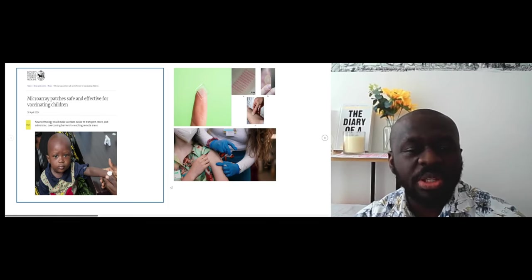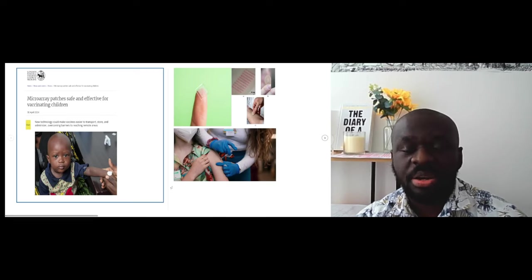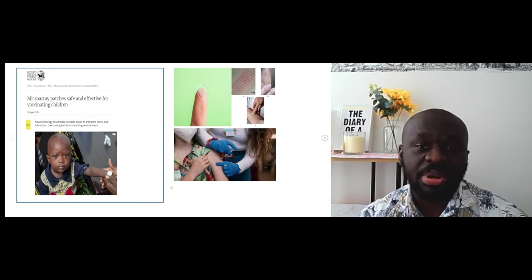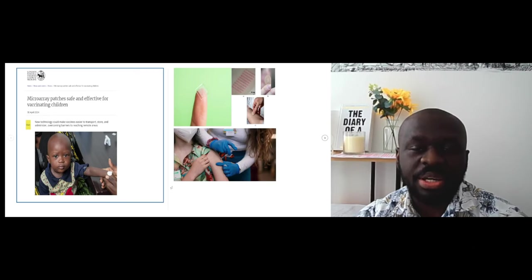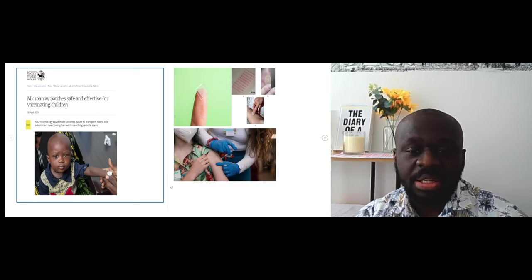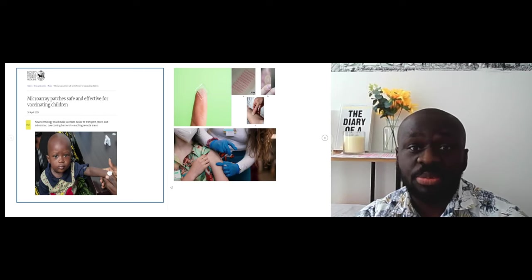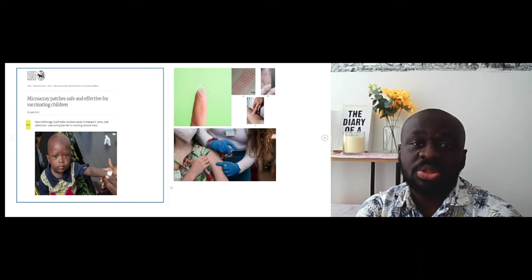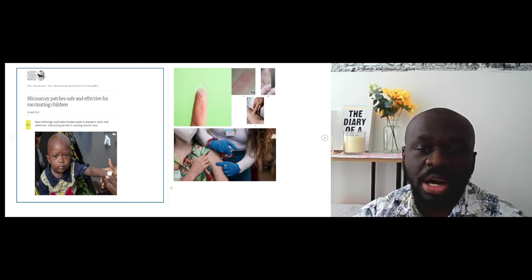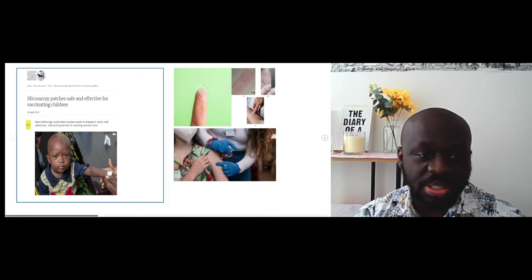So this is something exciting. It's called a microarray patch. Microarray patch or micro needle patch technology is something that's been around for quite a while now but it hasn't been used for vaccine delivery. It's been used to deliver some other forms of medications, so it's a patch essentially that's placed on either the arm or the forearm of a person. As you can see this child here, you can see that whitish patch there that is placed on his arm.